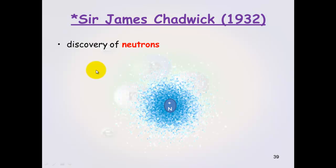The last scientist that you need to know about is Chadwick. And Chadwick discovered neutrons. And this is his model here. So we've got the neutrons in the nucleus in the center. And this explains the extra mass in the nucleus.